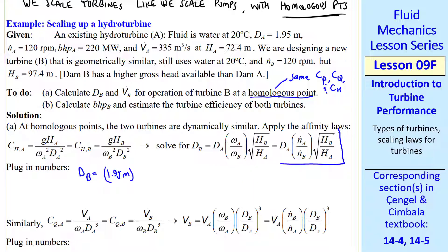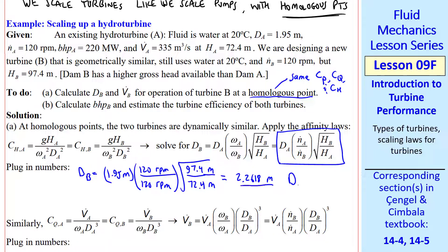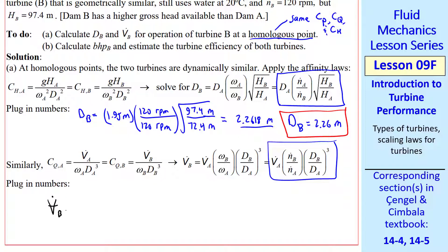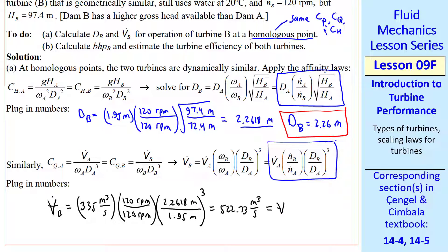Similarly, equating the capacity coefficients CQA = CQB, we solve for V̇B = V̇A × (ṅB/ṅA) × (DB/DA)³, and get V̇B = 523 m³/s. This is significantly higher than V̇A, so in times of drought you would be draining this dam quickly.